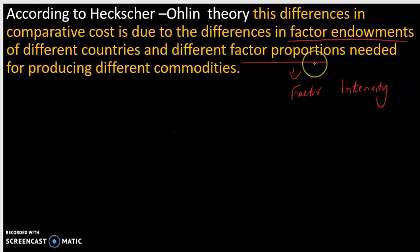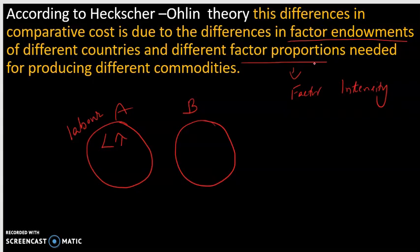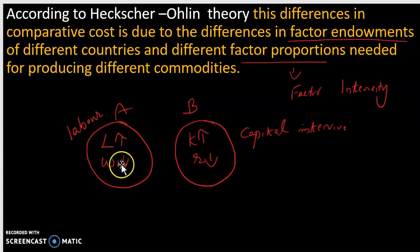Consider country A and country B. Country A is a labor-intensive country — that is, labor-abundant. Country B is a capital-intensive country. If country A is labor-abundant, then automatically their wage rate would be less, because the supply of labor is high. In country B, if capital is abundant, then the rate of interest would be less. So country A can produce labor-intensive goods at a cheaper rate.